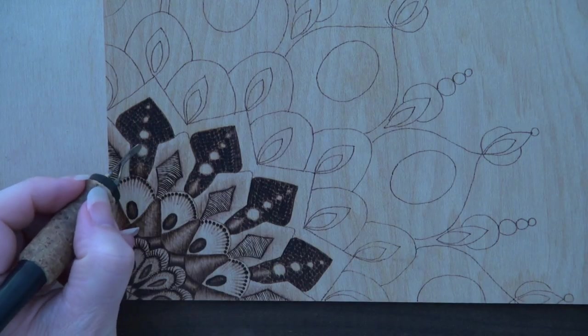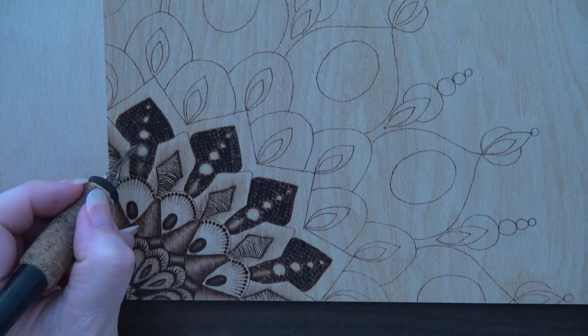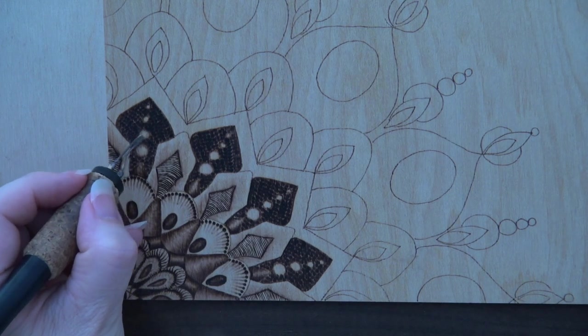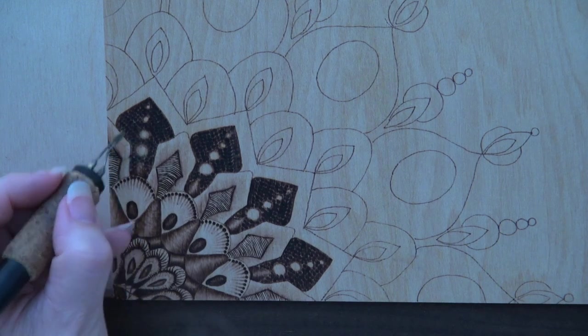Use the shader to lightly burn around the circles. Leave the center very pale so the circles will look like rounded or domed bumps.